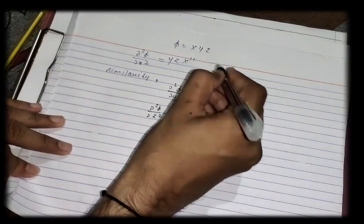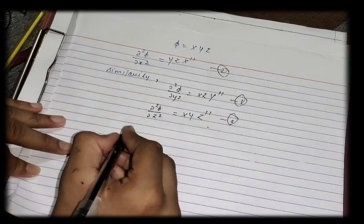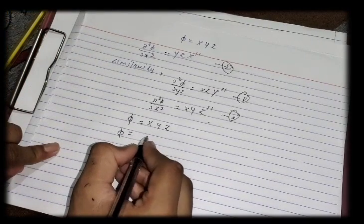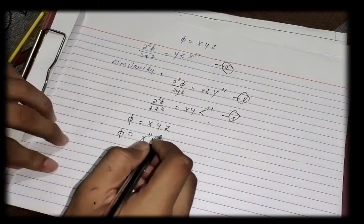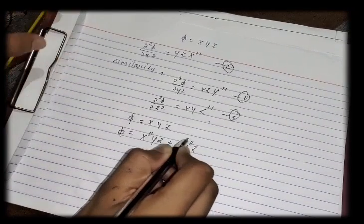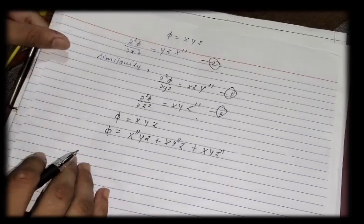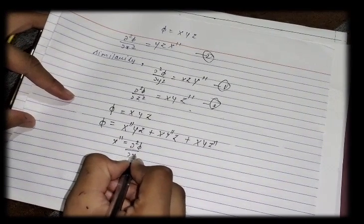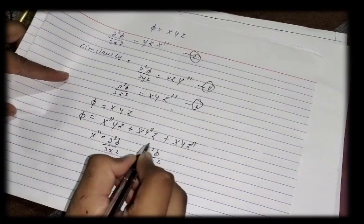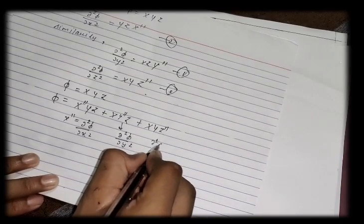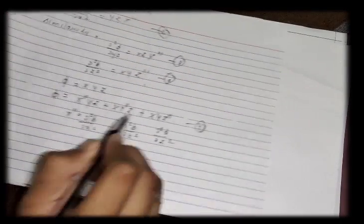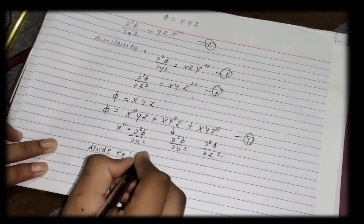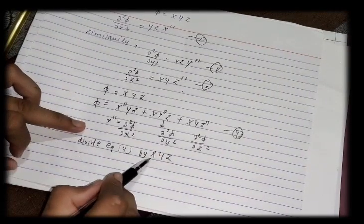Substituting these three values into the Laplacian equation, we get: X''YZ + XY''Z + XYZ'' = 0. This is equation 4. Now, applying the method of separation of variables, we divide equation 4 completely by X·Y·Z.